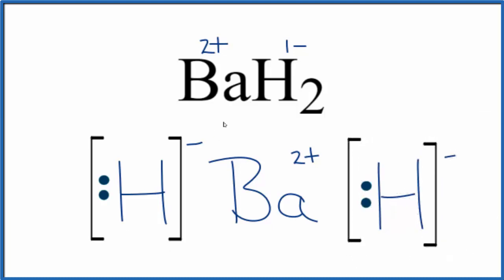This is the Lewis structure for BaH2, barium hydride. Note that hydrogen has two electrons around it. That's all it needs for a full outer shell. The barium transferred electrons, so it also has a full outer shell. We just don't write that.